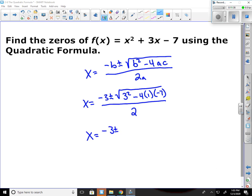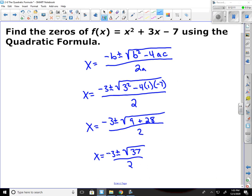X equals negative 3 plus or minus square root of 9. Negative 4 times 1 is negative 4. Negative 4 times negative 7 is a positive 28. So that's 9 plus 28 over 2. Negative 3 plus or minus 9 plus 28 is 37 over 2. 37 is a prime number, meaning nothing goes into it except 37 and 1. So you're done. That's your final answer.